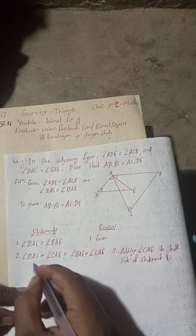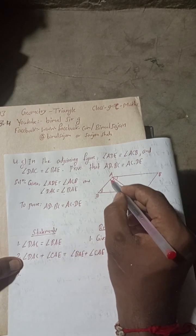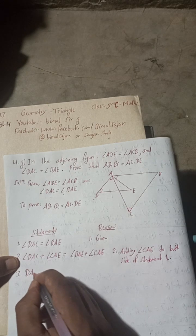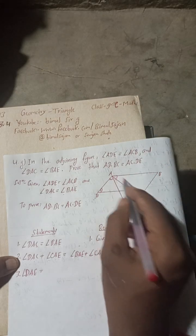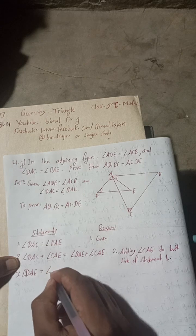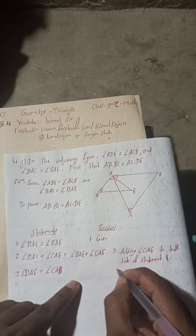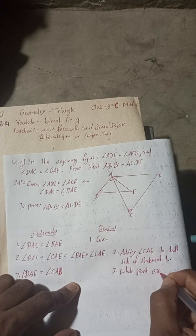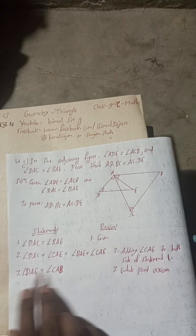Statement 3: angle DAC plus angle CAE equals angle DAE, and angle BAE plus angle CAE equals angle BAC (or CAB). So angle DAE is equal to angle CAB. The reason for this is the whole part axiom — this plus this equals the total on each side.